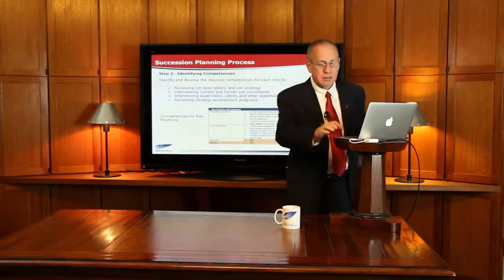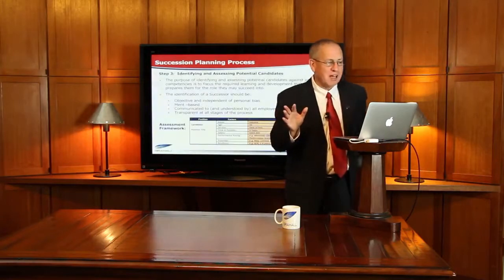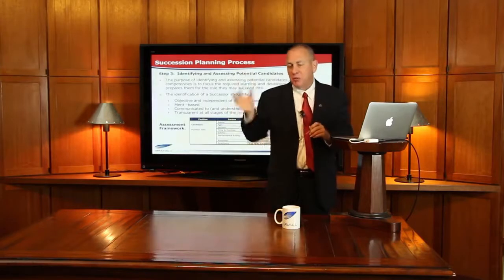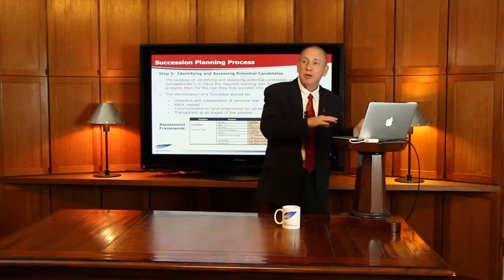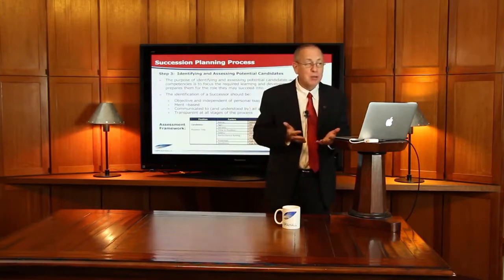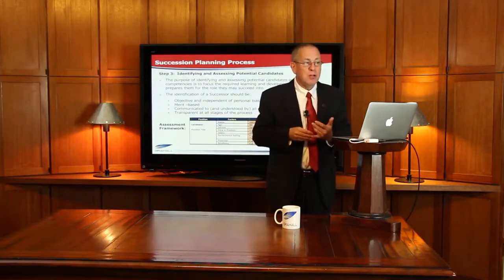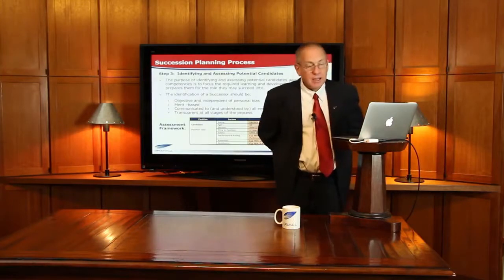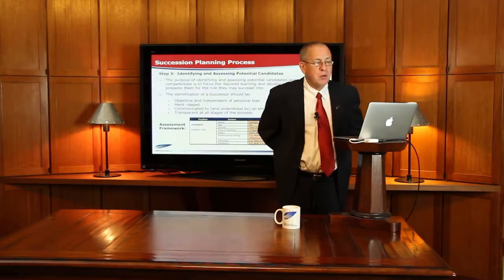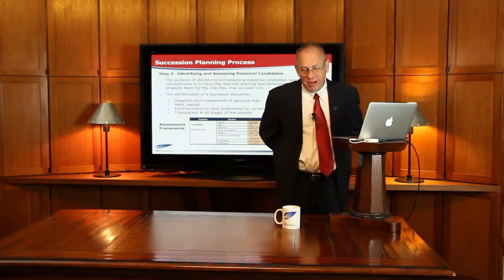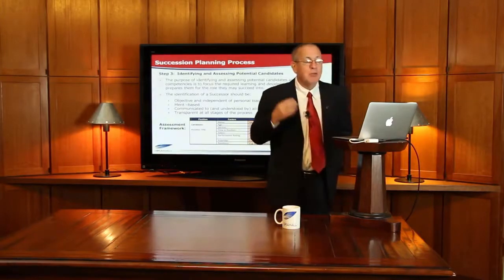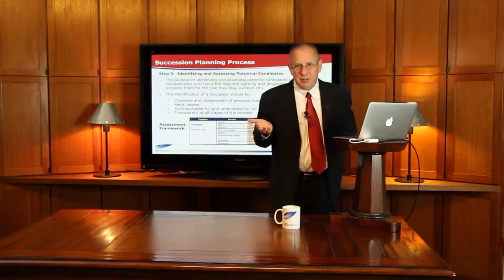That's step two. Step three is identifying and assessing potential candidates. Here we're looking at the supply side. In steps one and two we looked at the position — is it crucial, and what competencies are required? Now we're looking at the people who could potentially fill it. How do we identify and assess them? In step three we're going through a process of identifying and assessing potential candidates against job competencies, and identifying any required learning and development to prepare them for the role. We call them successors, and their identification should be objective and free of personal bias — merit-based, focused on performance. It should be communicated to and understood by the employees.